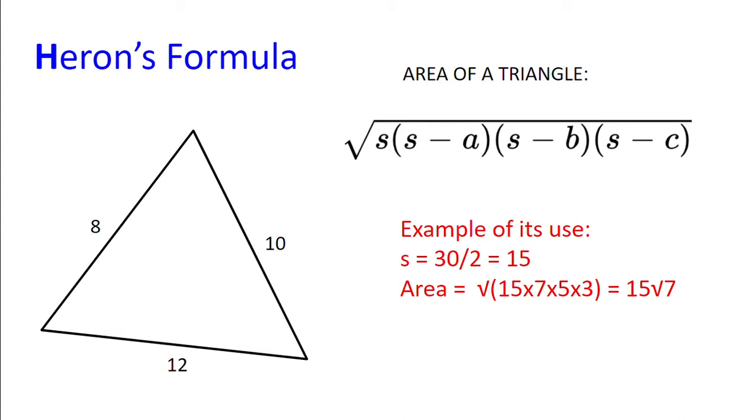If we look at the example shown, we have semi-perimeter being 8 plus 10 plus 12 divided by 2, which is 30 divided by 2 or 15. And so the area is the square root of 15 multiplied by 7 multiplied by 5 multiplied by 3, or 15 multiplied by the square root of 7.